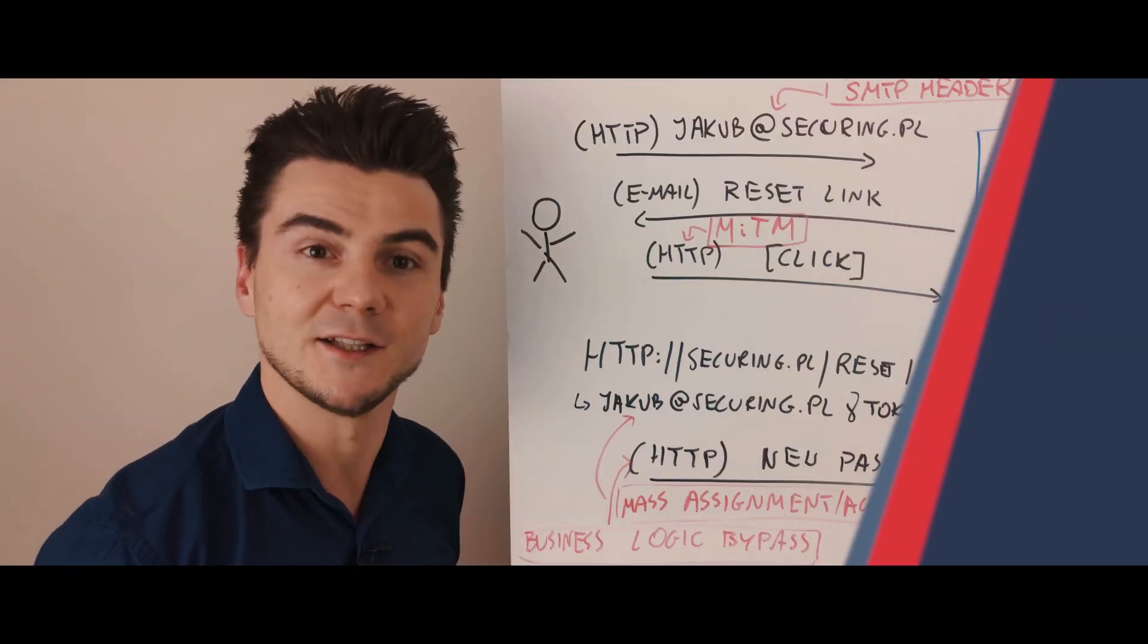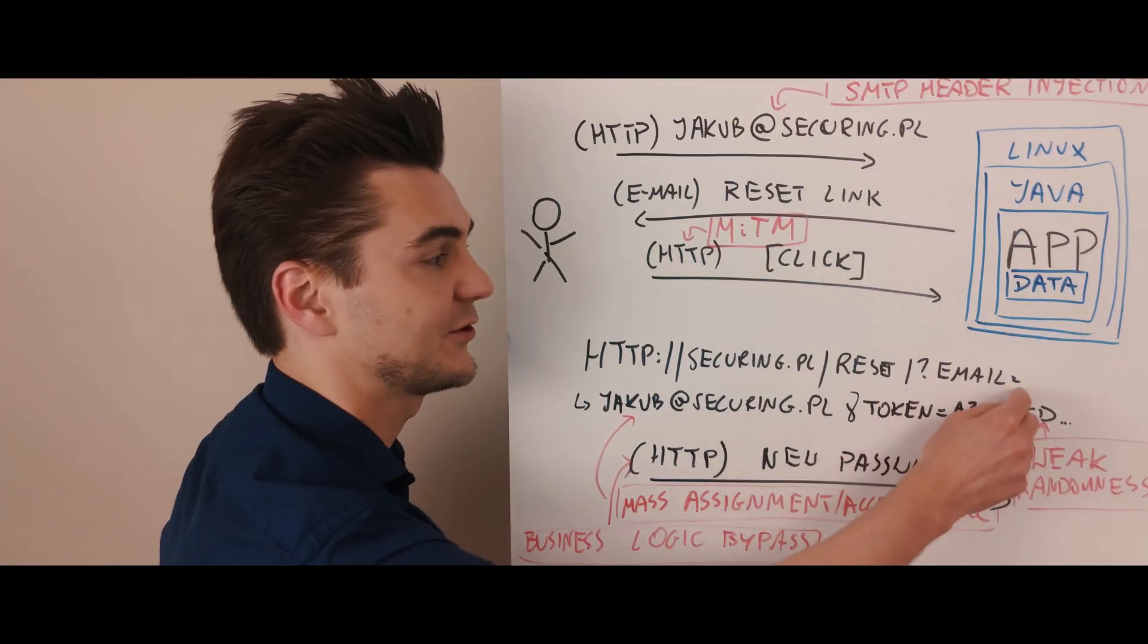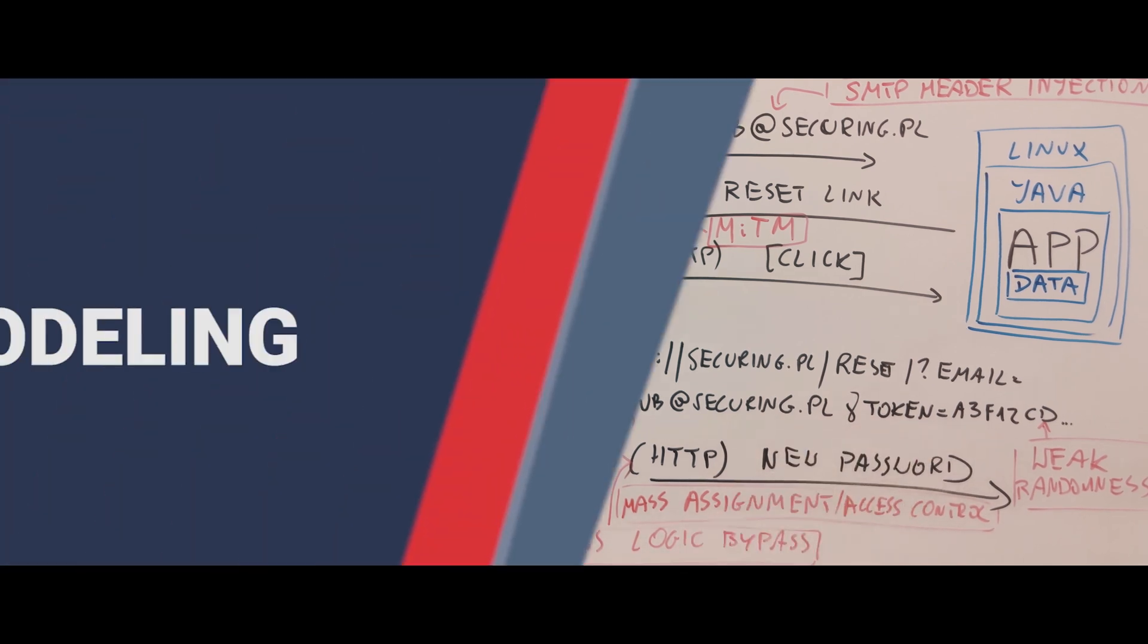Instant Mitigations? You can mitigate it by not sending email parameter at all, just the random token.